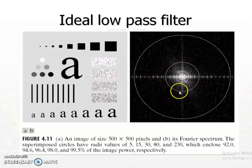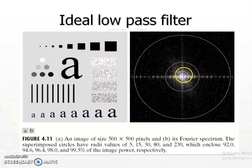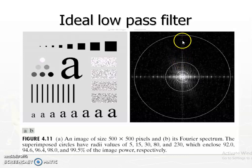This shows the spectrum and circles with different cut-off frequencies: d₀ = 5, 15, 30, 80, and 230. We decide these thresholds based on the amount of energy we want to retain — how much energy we allow in the high frequencies determines the value of the threshold d₀.